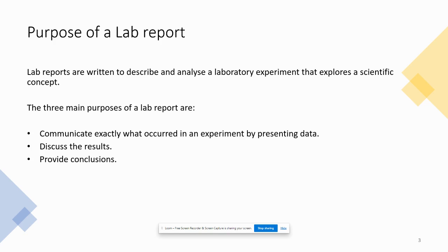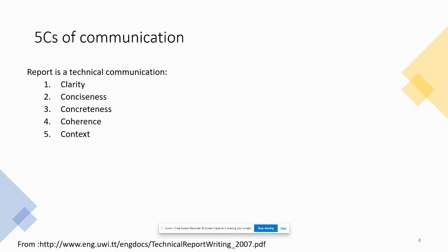The three main purposes of lab reports are: first, you communicate exactly what occurred in the experiment by presenting the experimental data — you record experimental data with variables and measurements. Second, we discuss the results — we get experimental data, analyze it, and obtain certain conclusions. Third, we provide those conclusions, reporting results obtained by calculation using our theoretical knowledge.